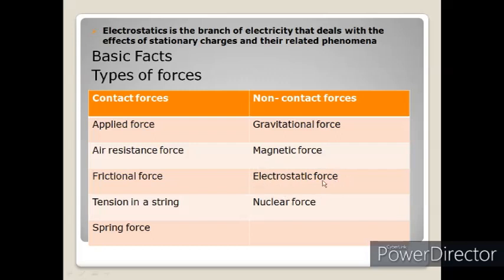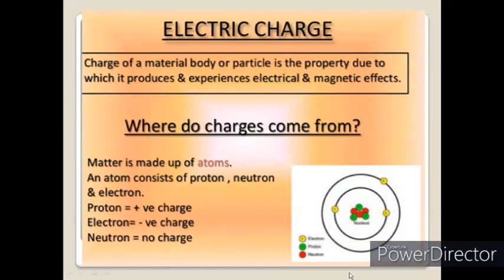Next is electric charge. Here we will see what is charge, where charges come from, and properties of charges. Charge of a material body or particle is the property due to which it produces and experiences electrical and magnetic effects. It is the property of a body — just as mass is one of the properties of an object, likewise charge is one of the properties of the object.